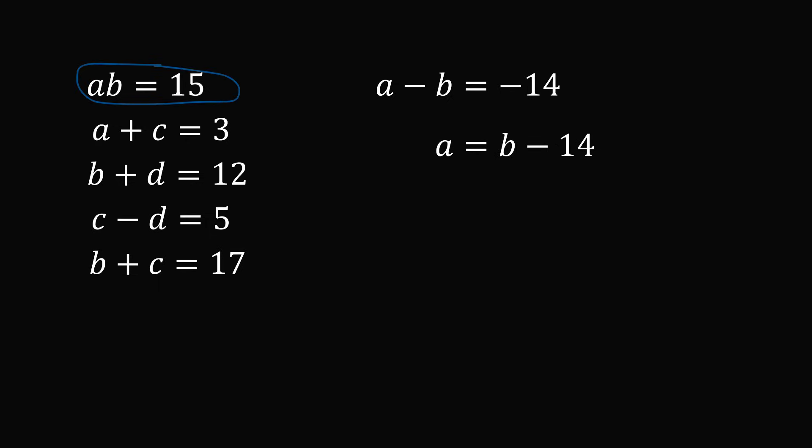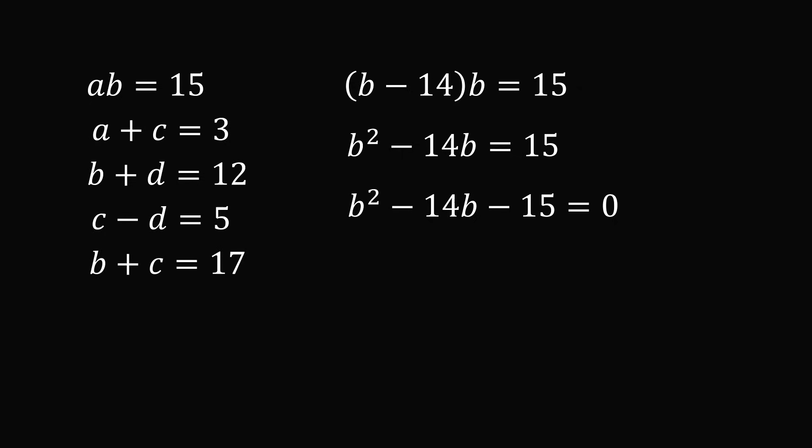Now, the very first equation we have is a times b is equal to 15. So, let's substitute for a in this equation. We have a multiplied by b is equal to 15, which means b minus 14, the quantity multiplied by b is equal to 15. We now have a single equation in just one variable. Let's focus on this equation. If we distribute the b, we have b squared minus 14b is equal to 15. And then we can subtract 15 from both sides of the equation. So, we have the quadratic equation b squared minus 14b minus 15 is equal to 0.